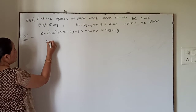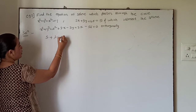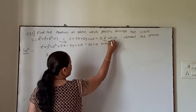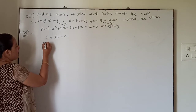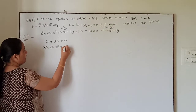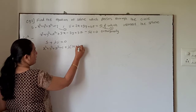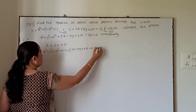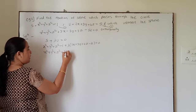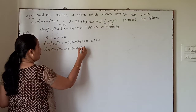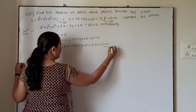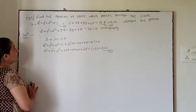The equation of the sphere passing through the circle is S + λU = 0. Here the sphere is equation 1 and the plane is equation 2. Therefore, the required sphere is x² + y² + z² − 1 + λ(2x + 3y + 4z − 5) = 0, which expands to x² + y² + z² + 2λx + 3λy + 4λz − 5λ − 1 = 0. This is equation 3.